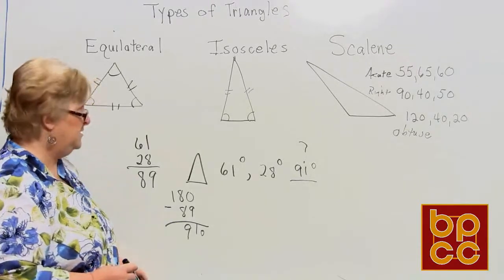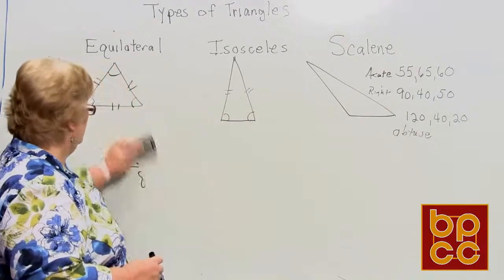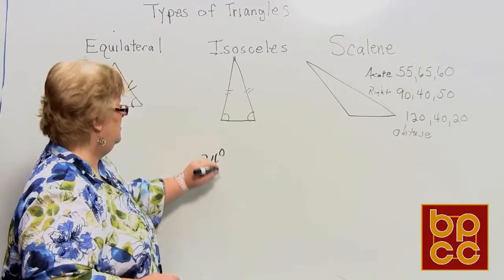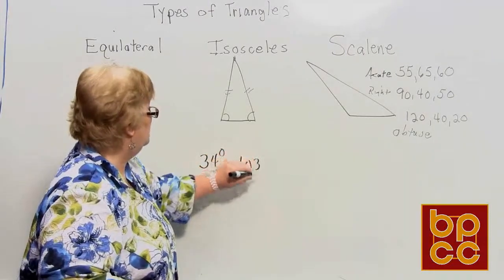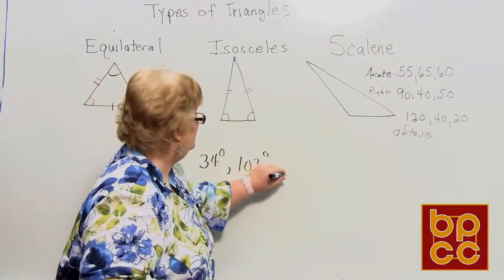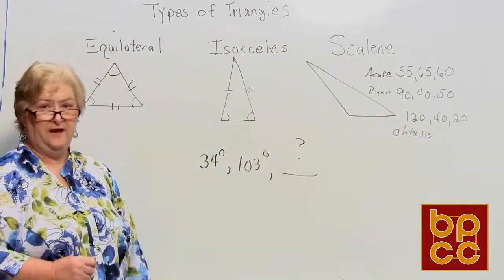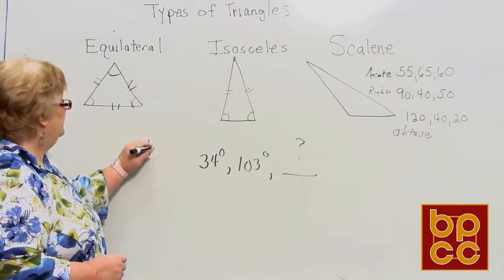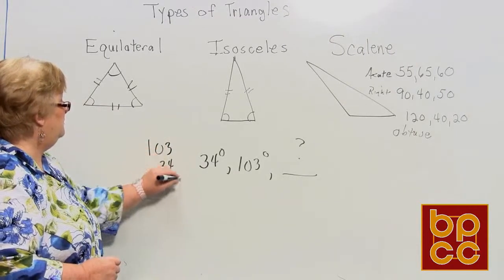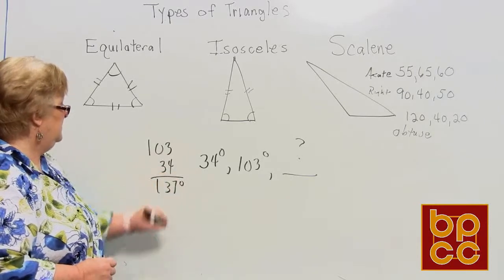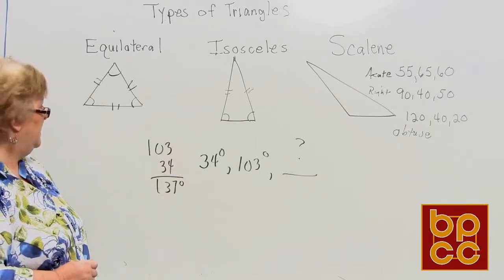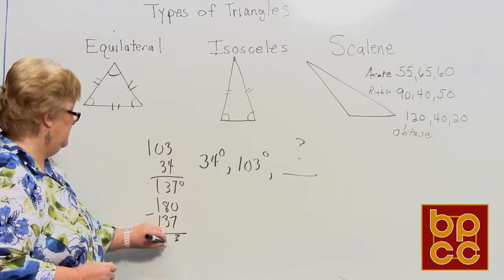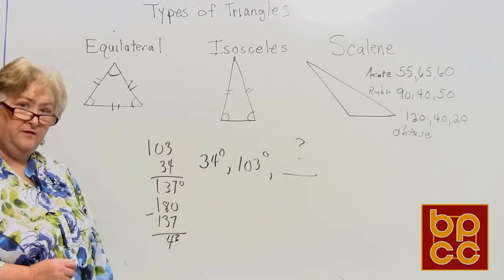Let's try another one. This time I'll give you 34 degrees and 103 degrees. Adding those two gives 137, and subtracting from 180 gives us the third angle of 43 degrees.